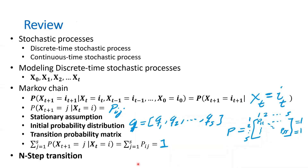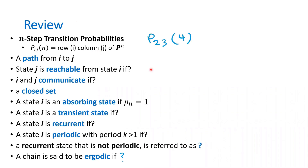We learned about n-step transitions. If you are in a certain state, the probability of being in another state n time steps from now is found by computing P to the power n, then looking at row i, column j of that matrix. For example, P_{23}^{(4)} means the probability of going from state 2 to state 3 in four steps — row 2, column 3 of P^4. Alternatively, we multiply row 2 of P^3 by column 3 of P to get the P^4 entry.